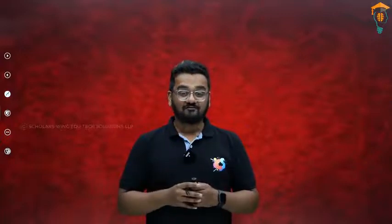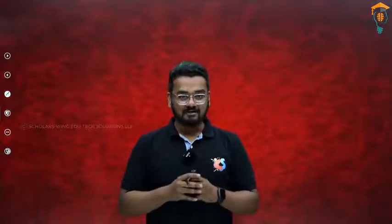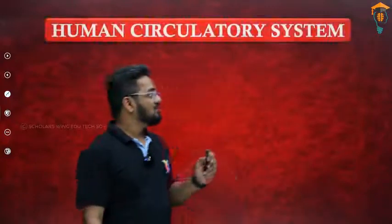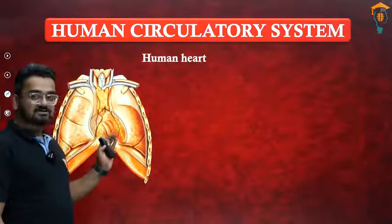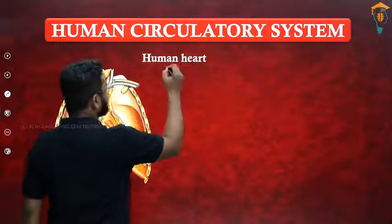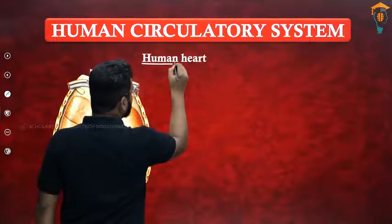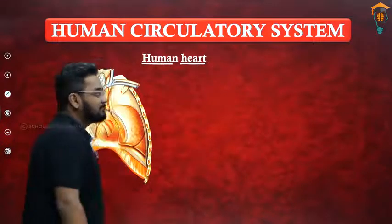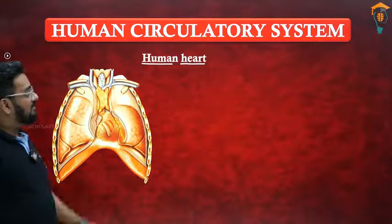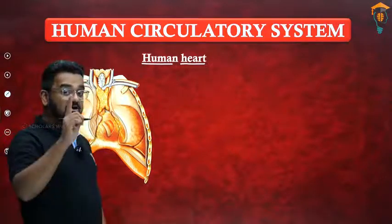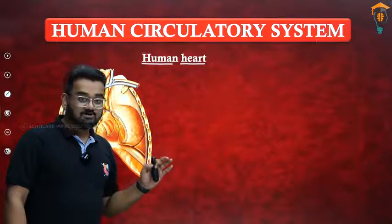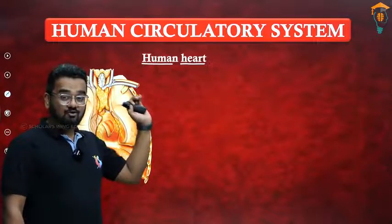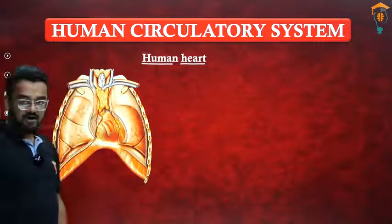Welcome back, students. In this video we are going to talk about the most important topic of this chapter — the human circulatory system. The human circulatory system mainly consists of blood vessels, which we have already discussed, and now we will be talking about the human heart. Remember that it was William Harvey who discovered the circulatory system. The organ of most importance in the human circulatory system is the human heart.